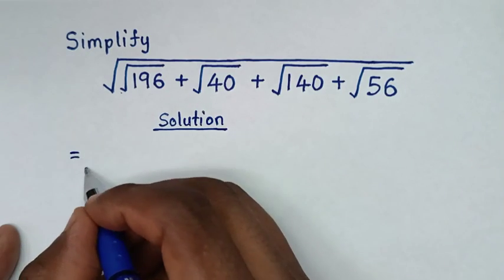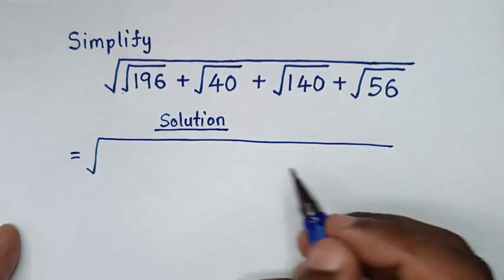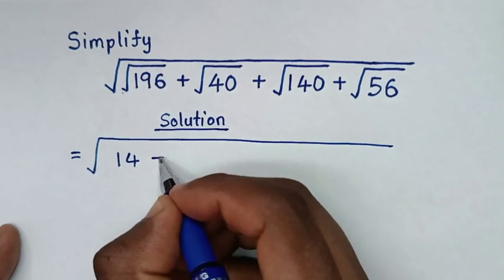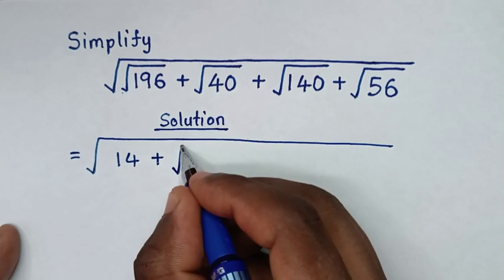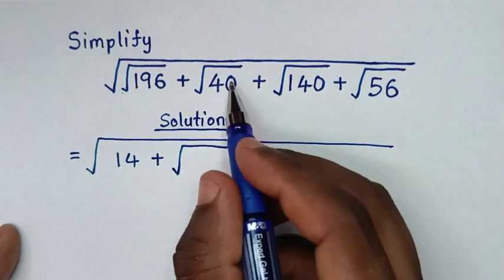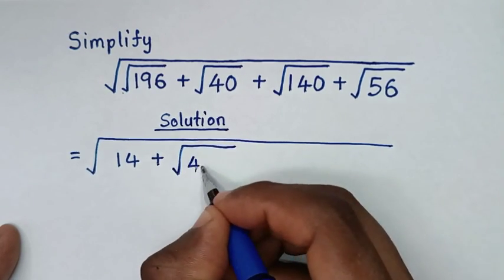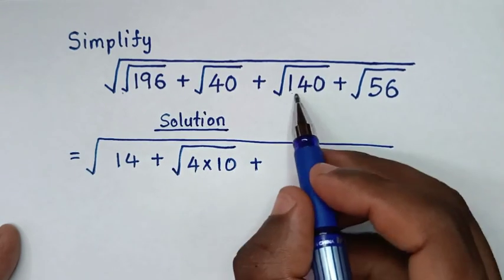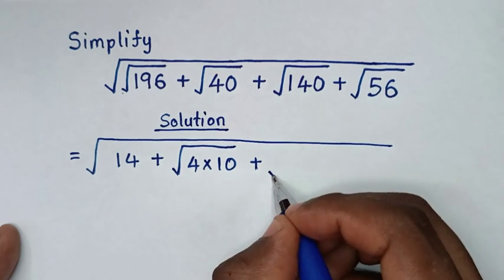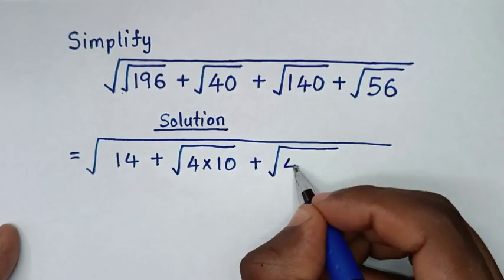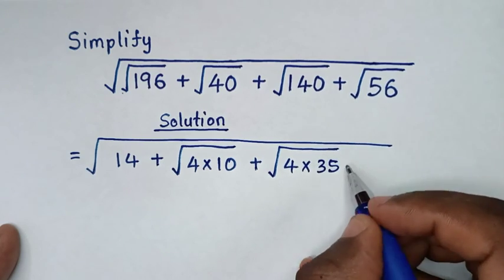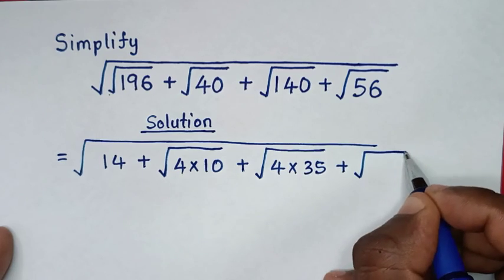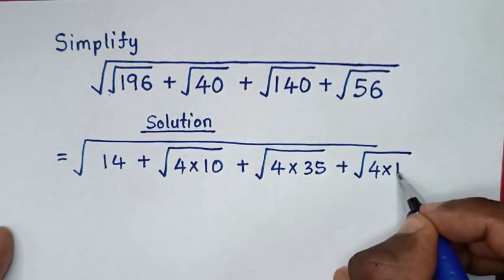The solution: it will be equal to square root of — square root of 196 is 14 — then plus square root of 40, where 40 is the same as 4 times 10, then plus square root of 140, which is 4 times 35, then plus square root of 56, which is 4 times 14.